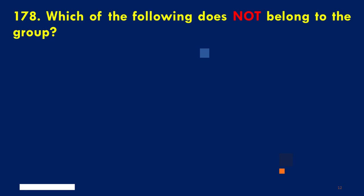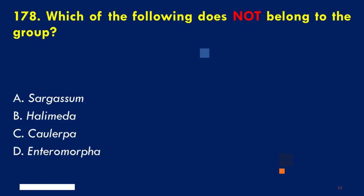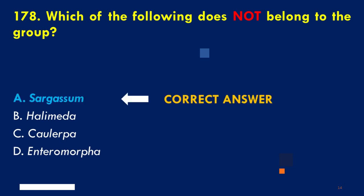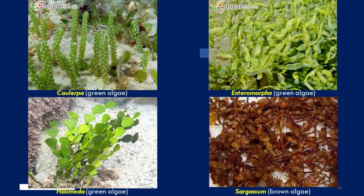Which of the following does not belong to the group? A. Sargassum, B. Halimeda, C. Chaetomorpha, D. Enteromorpha. The correct answer is A. Sargassum. Among the options, Sargassum is the only member of the phylum Ochrophyta, formerly known as Phaeophyta, or the brown algae. Halimeda, Chaetomorpha, and Enteromorpha are all members of the phylum Chlorophyta, or the green algae.